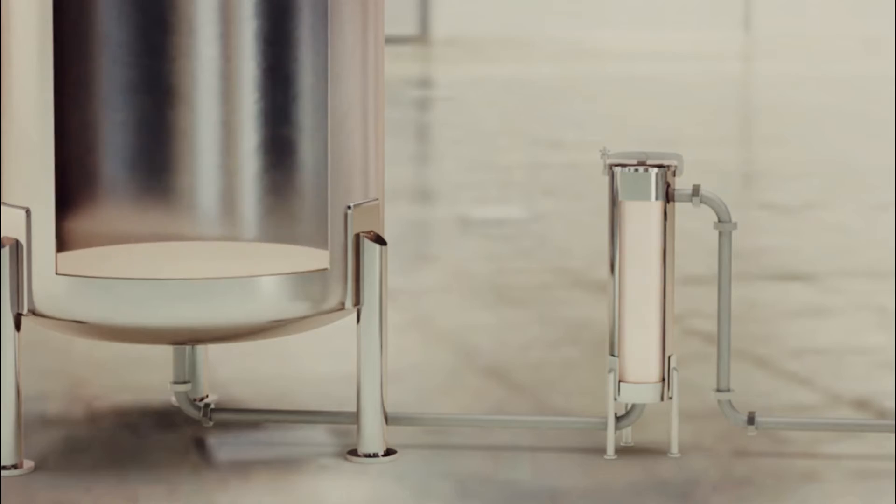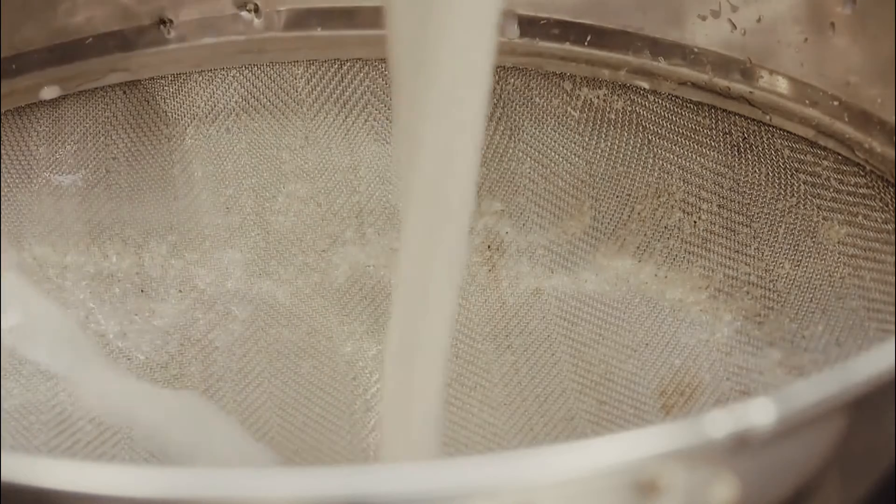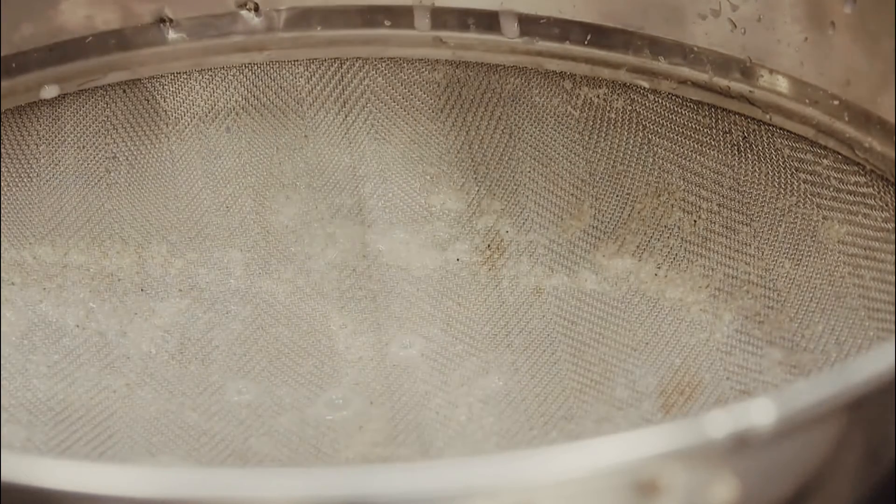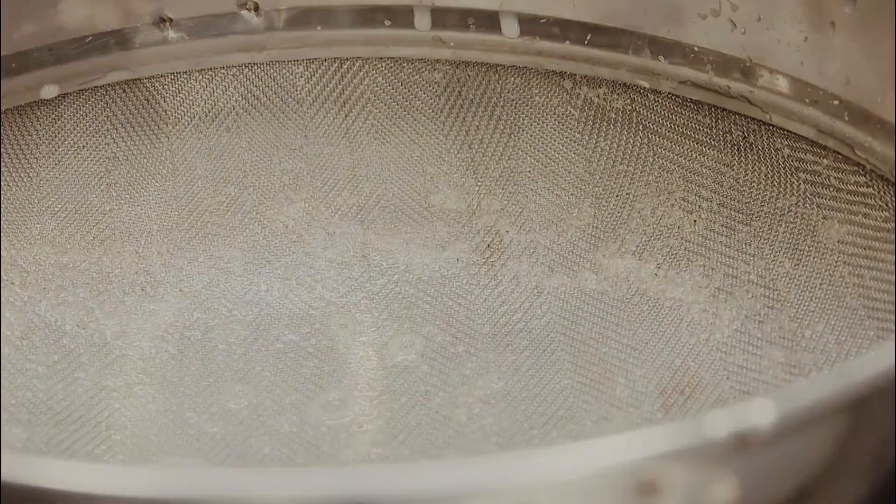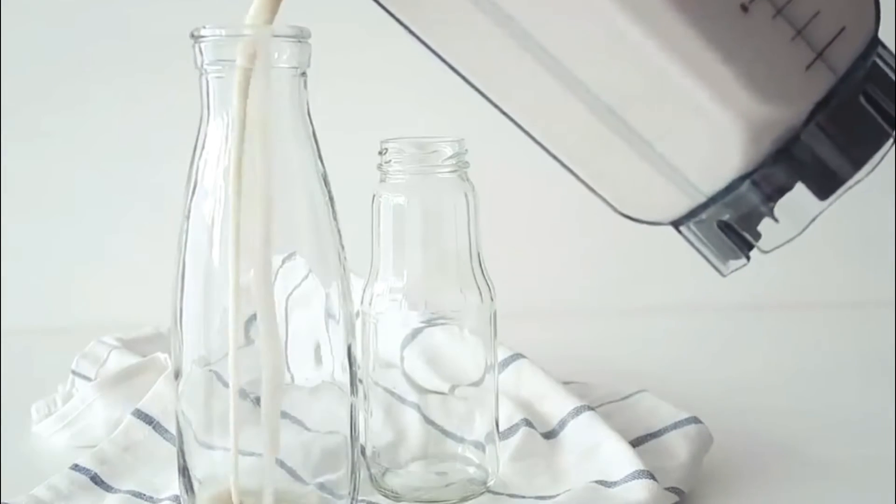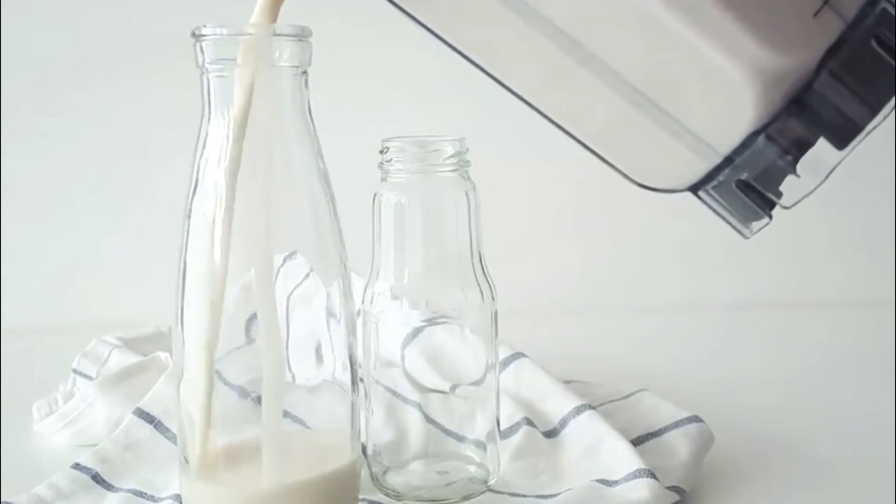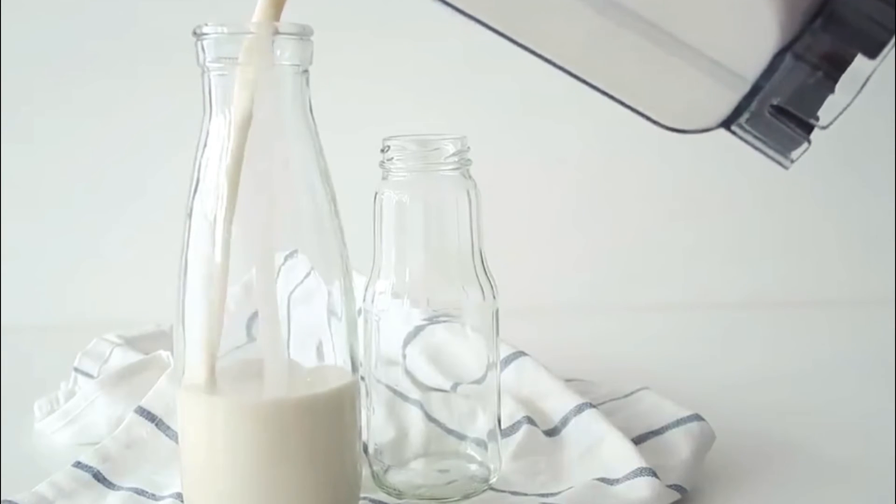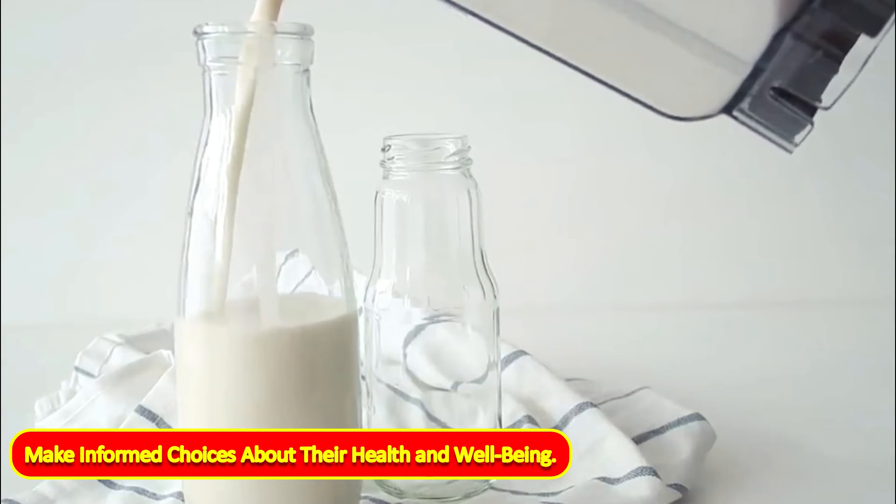With the final touches applied, the oat milk is elegantly packaged in eco-conscious containers, ready to embark on its journey to homes and cafes around the world. Each package is adorned with informative labels, providing discerning consumers with valuable insights into the milk's nutritional content and provenance, empowering them to make informed choices about their health and well-being.